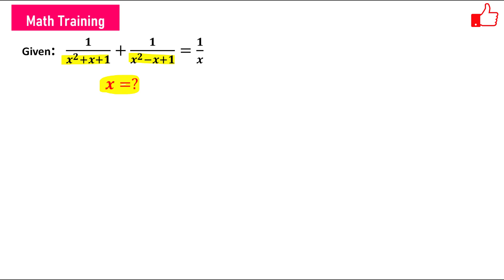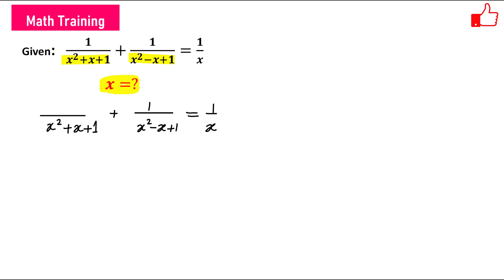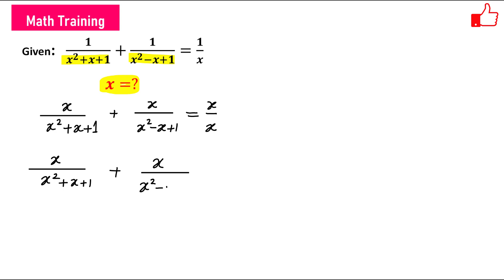Let us see how we can do that. We have 1/(x² + x + 1) plus 1/(x² - x + 1) equals 1/x. Now let us multiply throughout by x. So this becomes x/(x² + x + 1) plus x/(x² - x + 1) equals 1.